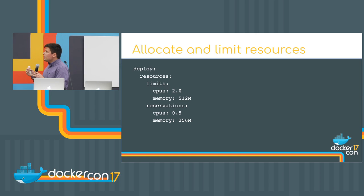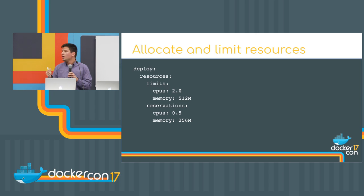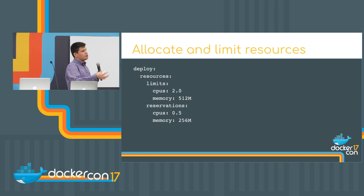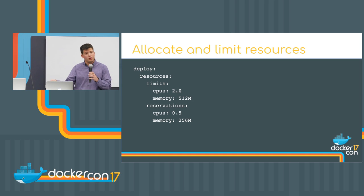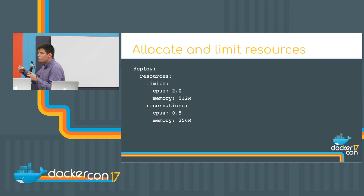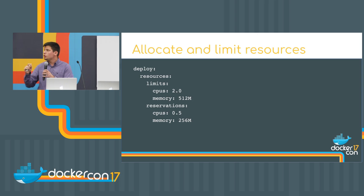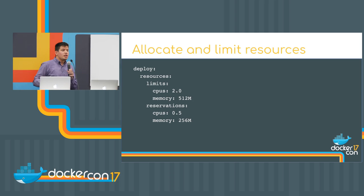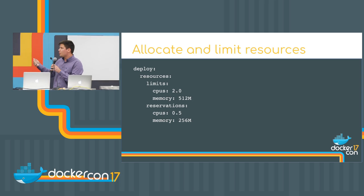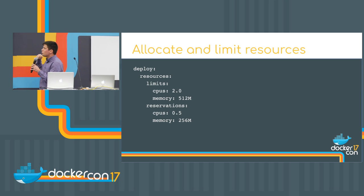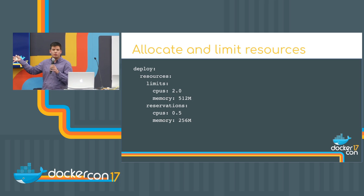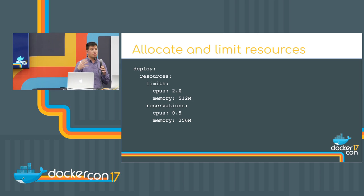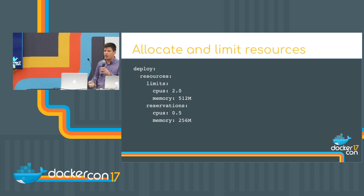One very nice thing is the resources key in the deploy config. It allows two things: first, limiting containers, which we had before; and second, reservation. Reservation means you can say do not schedule this container to a node having less than 256 megabytes. So if you have a node with one gigabyte of RAM and try to schedule five tasks to it, the fifth task will not land on that node because it's not capable of handling it.